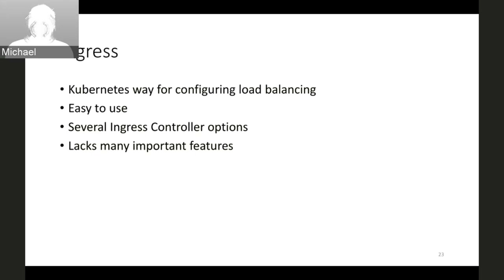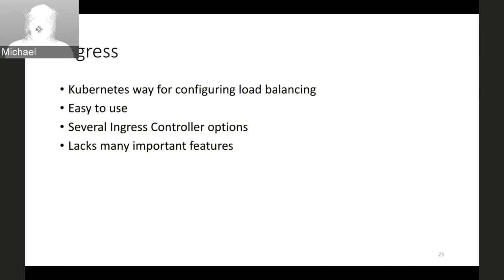To summarize: the Ingress resource is the Kubernetes way for configuring load balancing, particularly HTTP load balancing. As we saw, it is easy and straightforward to use. There are several load balancers you can use with Ingress, and the number of options is greater than for route resources. However, Ingress resource is slightly more limited than OpenShift routes and lacks some important features. However, NGINX controllers support various extensions — annotations, ConfigMap keys, or customized templates — and extensions are one of the most powerful features of Ingress controllers.